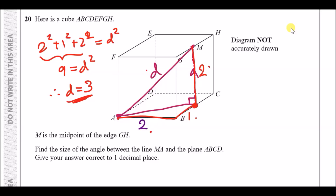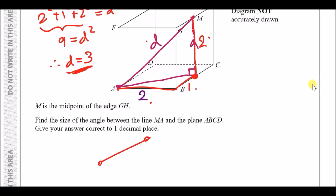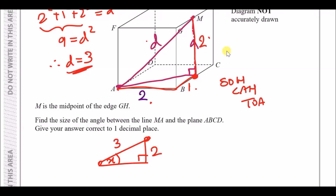This will be the diagonal length. Taking this right-angle triangle out — the purple triangle — we have a triangle where the diagonal length is three. We're trying to find this angle and we have a vertical length of two. Using SOH-CAH-TOA, the opposite is two and the hypotenuse is three (always opposite the right angle), so we use sine because we have O and H.